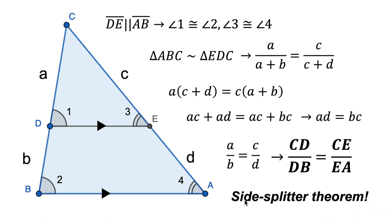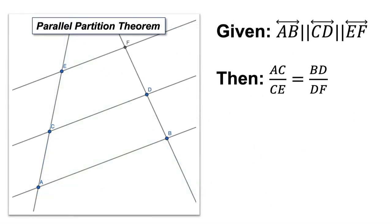Isn't that cool? We've proved it. The side splitter theorem is very logical — it's built on parallel lines and corresponding congruent angles and similar triangles. That's the connection. Now, the next theorem is the parallel partition theorem, and it's built on the side splitter theorem.